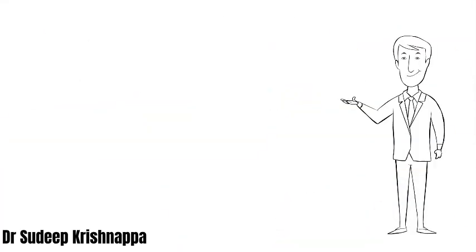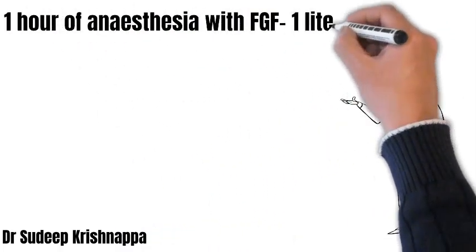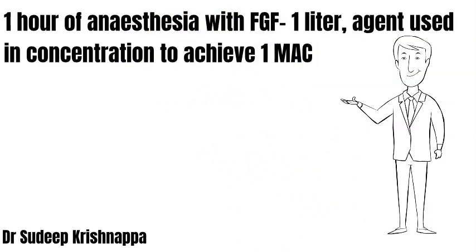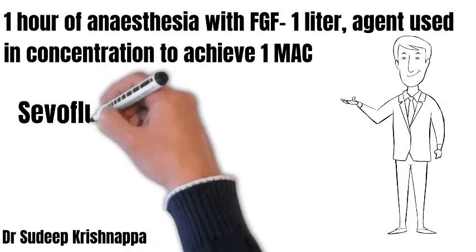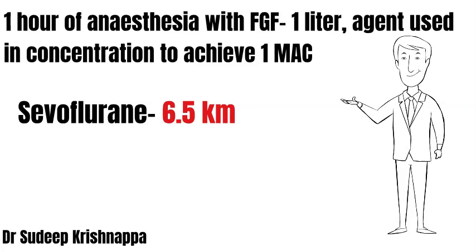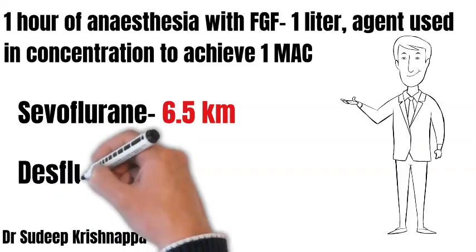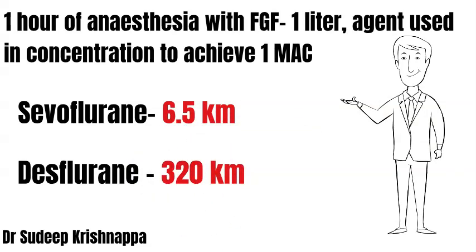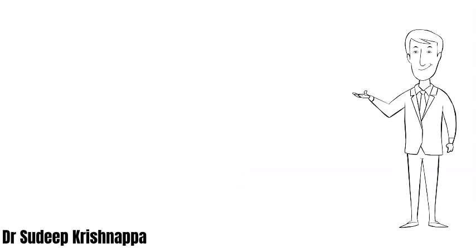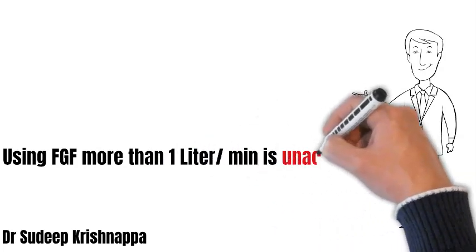To make the global warming potential easier to understand: if you use one hour of anesthetic agent with 1 liter fresh gas flow maintaining 1 MAC concentration of sevoflurane, the global warming cost would be equivalent to driving a car about 6.5 kilometers. If you use desflurane under similar circumstances, the global warming cost would be equivalent to driving a car about 320 kilometers. Desflurane has a substantially higher contribution to global warming, so if it is used, it must be used with the lowest possible fresh gas flow — any fresh gas flow more than 1 liter would be absolutely unacceptable.